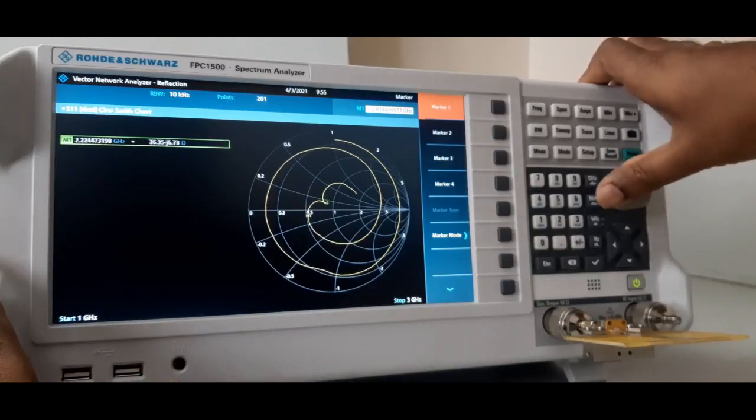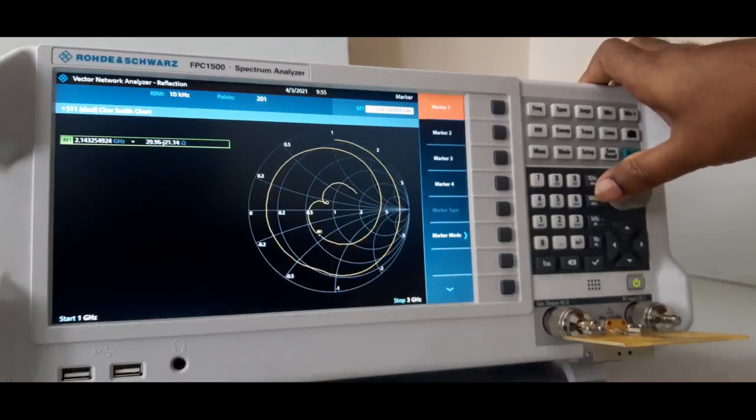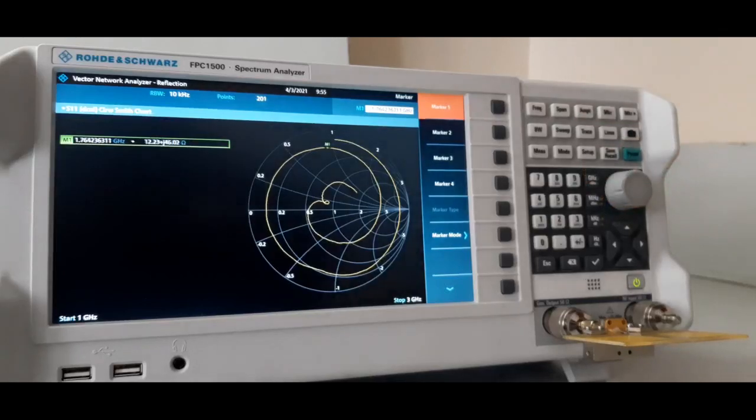Marker is moving. 29 ohms at 2.14 gigahertz. And frequency changing, impedance also changing. As per the design, 2.5 gigahertz, it is very close to 50 ohms, that is 44 ohms.